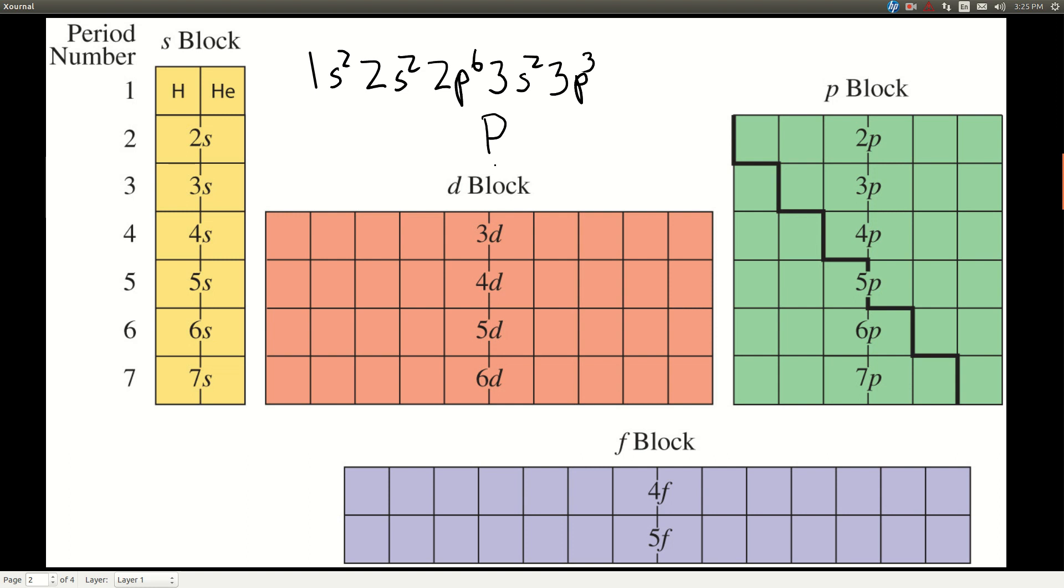Now, we can write the core notation, noble gas notation, for this really easily. All we have to go is to the previous noble gas, so as we're reading this periodic table from left to right, top to bottom, if this is phosphorus right here, the previous noble gas would be here, which is neon,